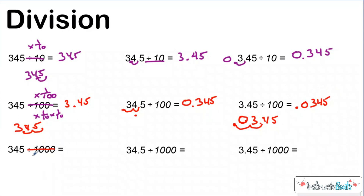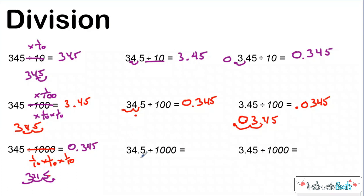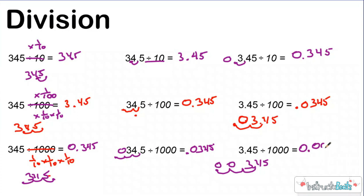Same thing for dividing by a thousand, except that's going to be one-tenth times one-tenth times one-tenth, so I need to move my decimal three places. A lot of teachers just teach you that you have three zeros so you can move over three places, but I want to show you why. Here's three hundred forty-five — my decimal is next to the ones place — so one, two, three: my answer's zero and three hundred forty-five thousandths. Same thing: one, two, three — add a zero to make sure my digits are in the right place value — giving three hundred forty-five ten-thousandths. When we divide, we're moving the decimal to the left; when we multiply, we're moving it to the right.